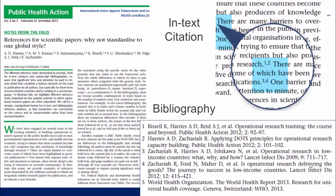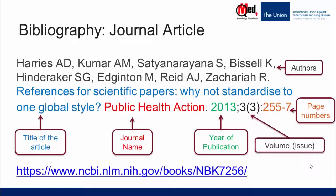Here is an example of a journal article. If you notice, within the main text we have cited using numbers 1, 2, 3, 4. This is referred to as in-text citation. At the end of the article, we provide the description of what 1, 2, 3, 4 indicate. This is referred to as the bibliography or reference list.